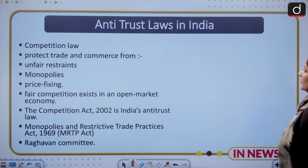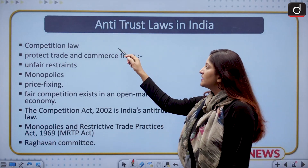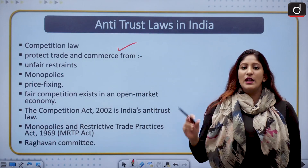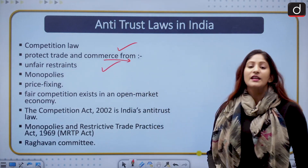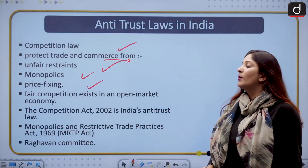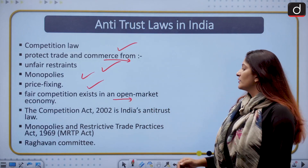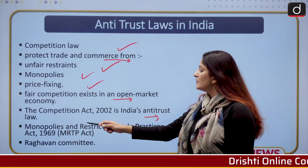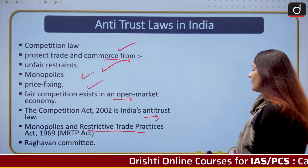Moving ahead, let us talk about antitrust law. What is antitrust law? This is the competition law of India and it can go by different names in different countries, but the overall ambit is antitrust law. It protects trade and commerce from unfair restraints, monopolies, domination, and price fixing. It wants to ensure that competition is fair and exists in the open market economy. The Competition Act of 2002 is India's antitrust law. It was amended in 2007 and replaced the Monopolies and Restrictive Trade Practices Act of 1969 on the recommendation of the Raghavan Committee.